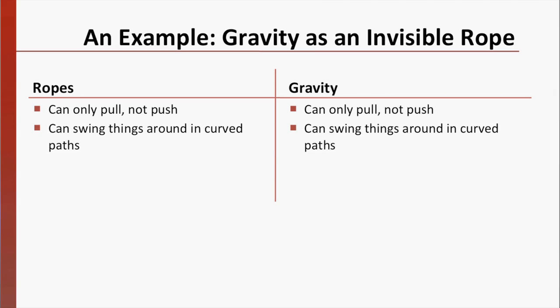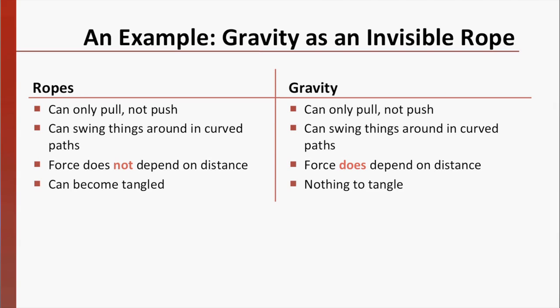Unfortunately, the model breaks down quickly. The amount of force a rope exerts does not change with the length of the rope, whereas gravity's force definitely does depend on distance. Ropes can become tangled, whereas gravity has nothing to tangle. We can see that this model works for some purposes, but not for others.